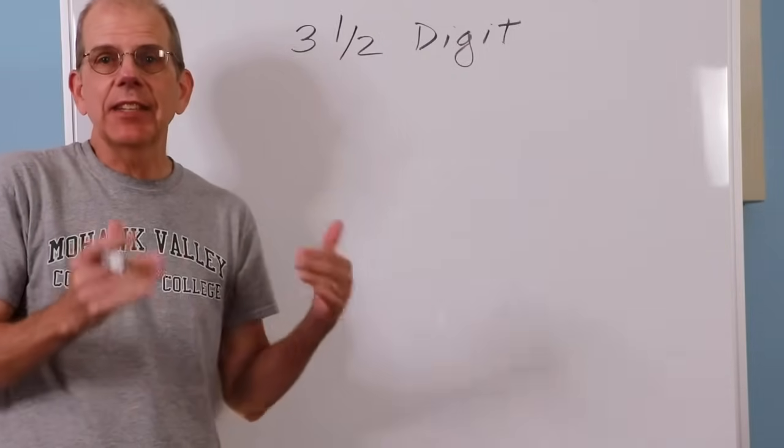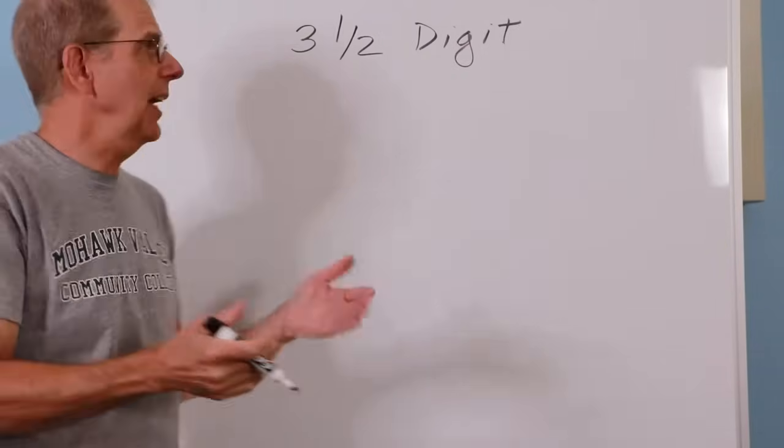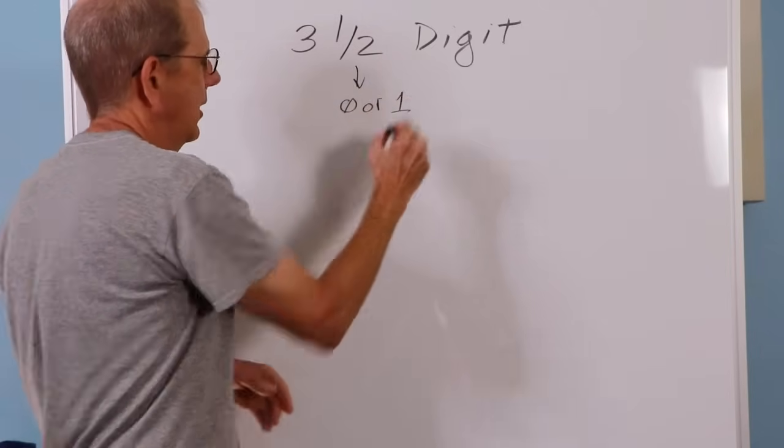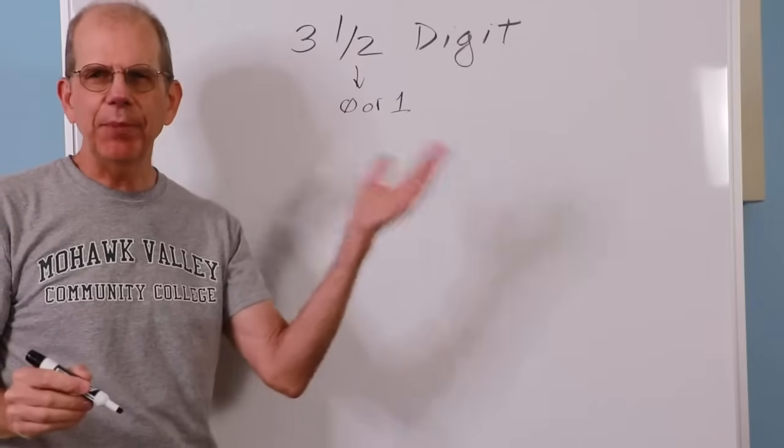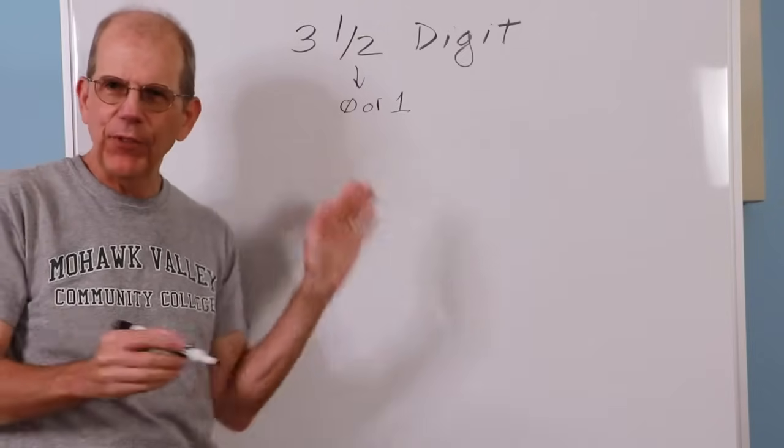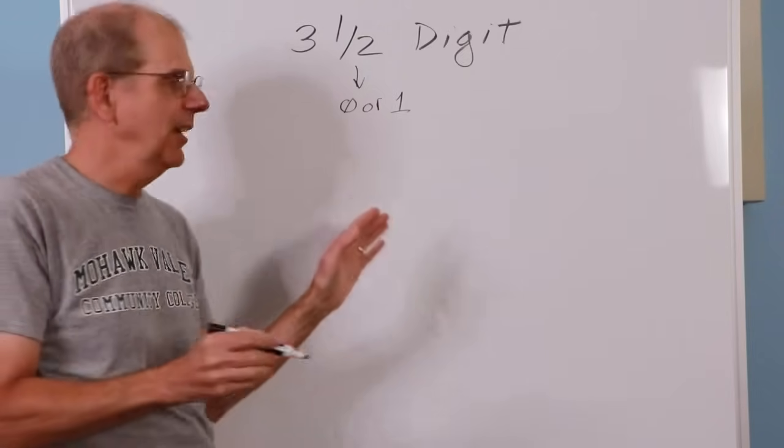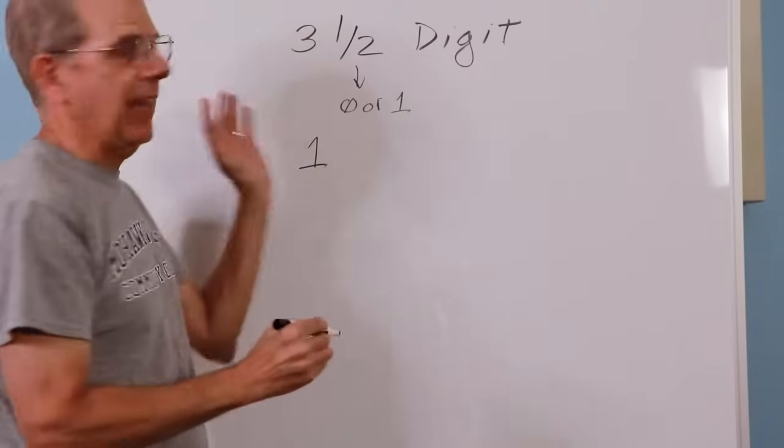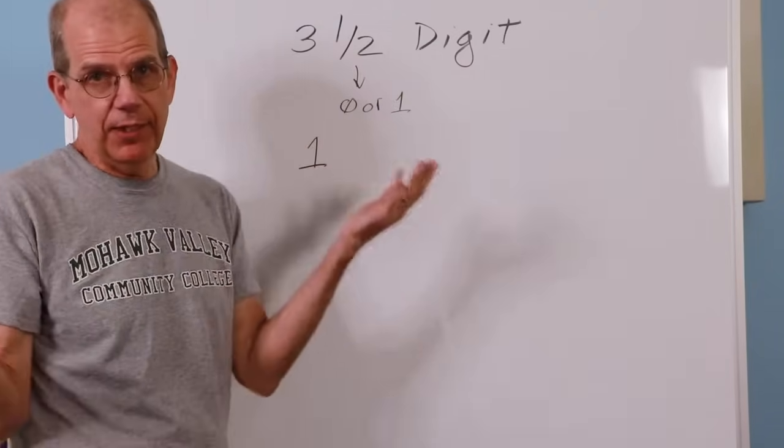Half a digit is the leading digit. And basically, a half digit can be 0 or 1. So if you have a 3 1/2-digit meter, that means its first or most significant digit can be as big as a 1. And then the next three digits, of course, can be as big as a 9.